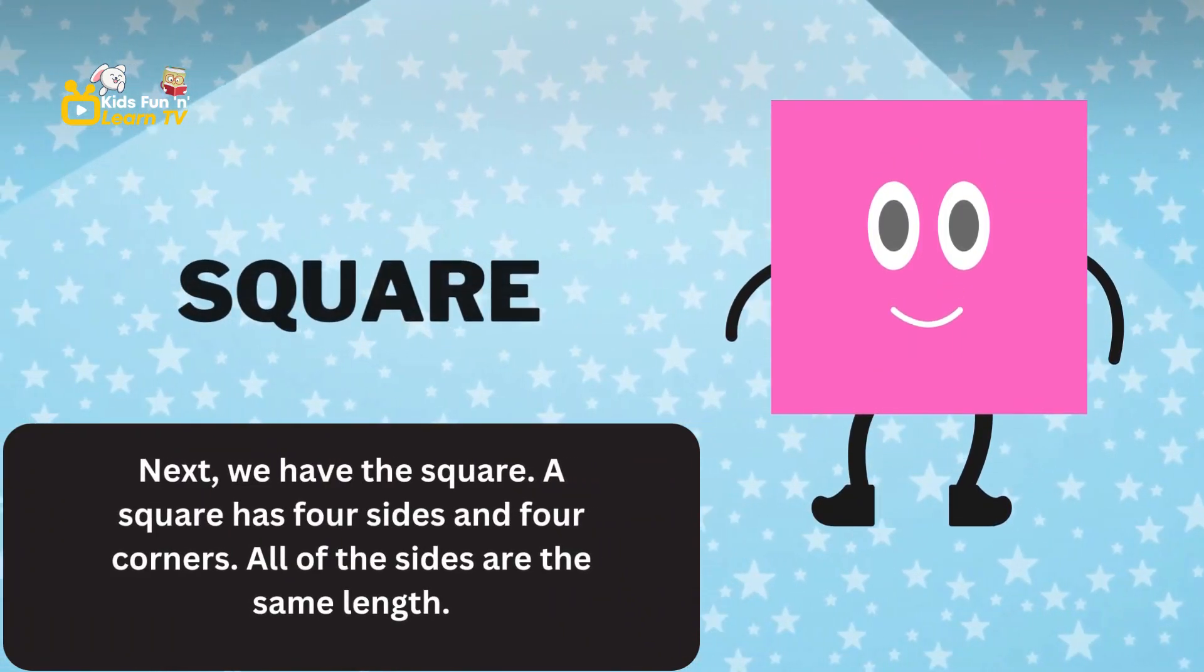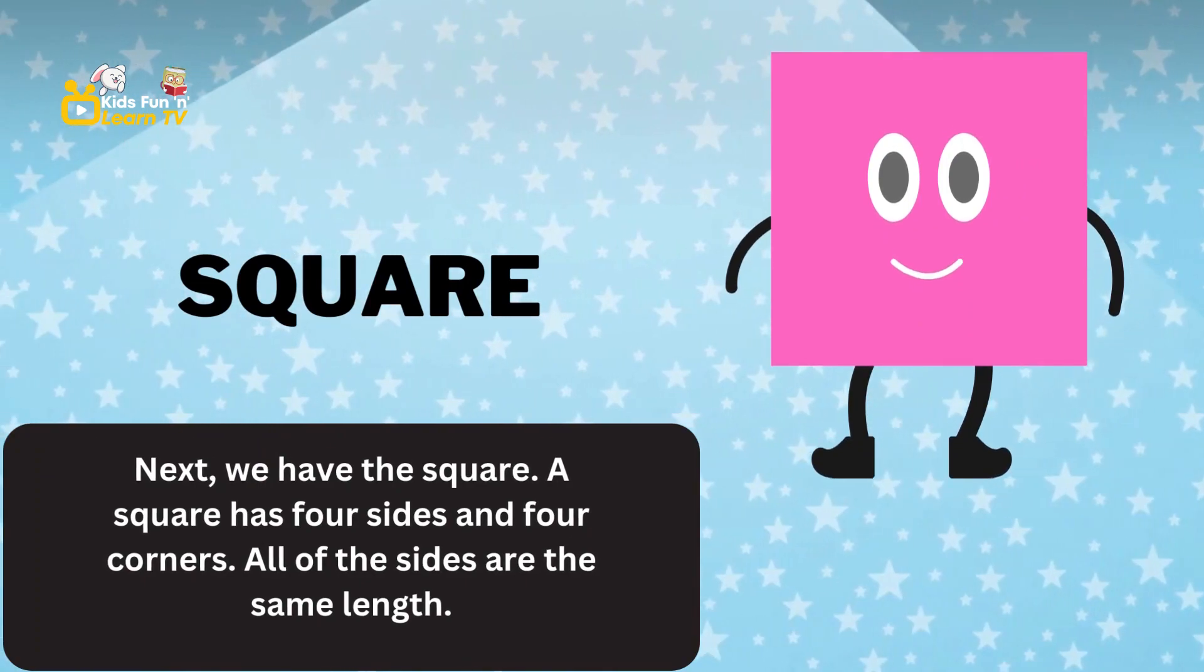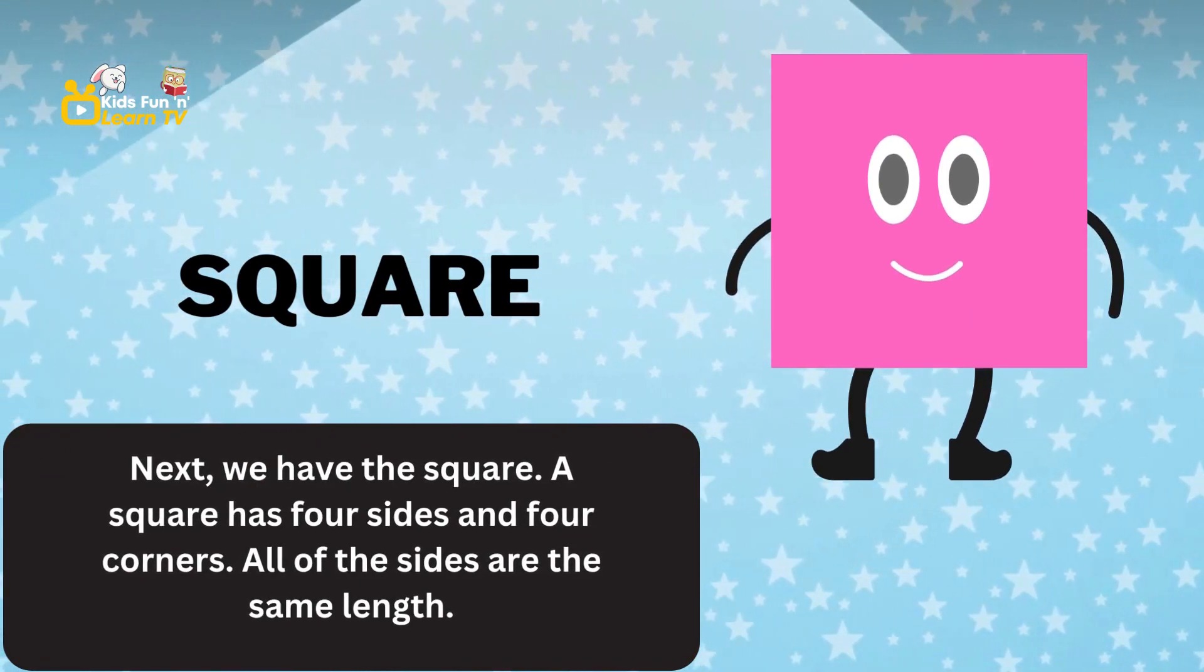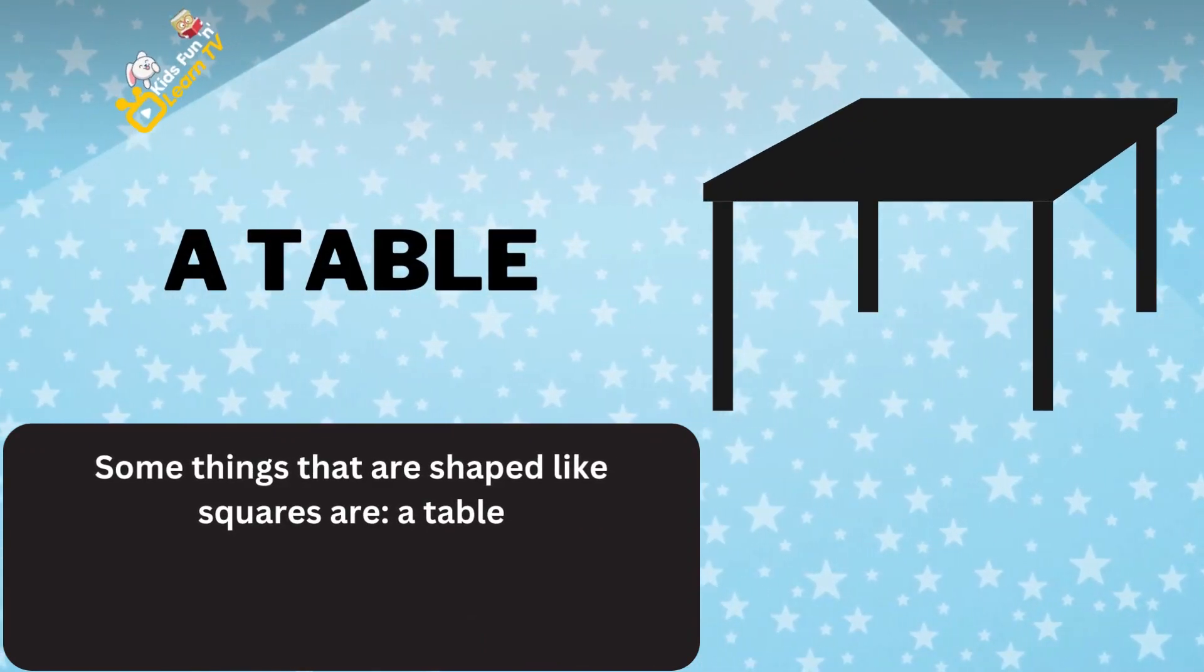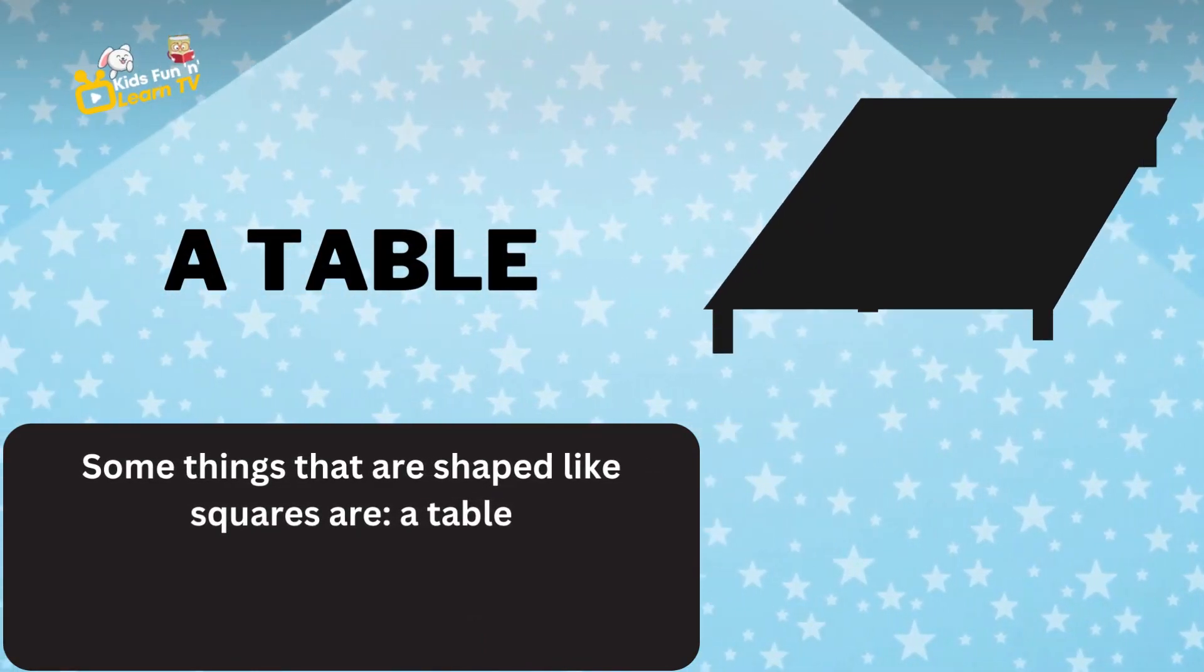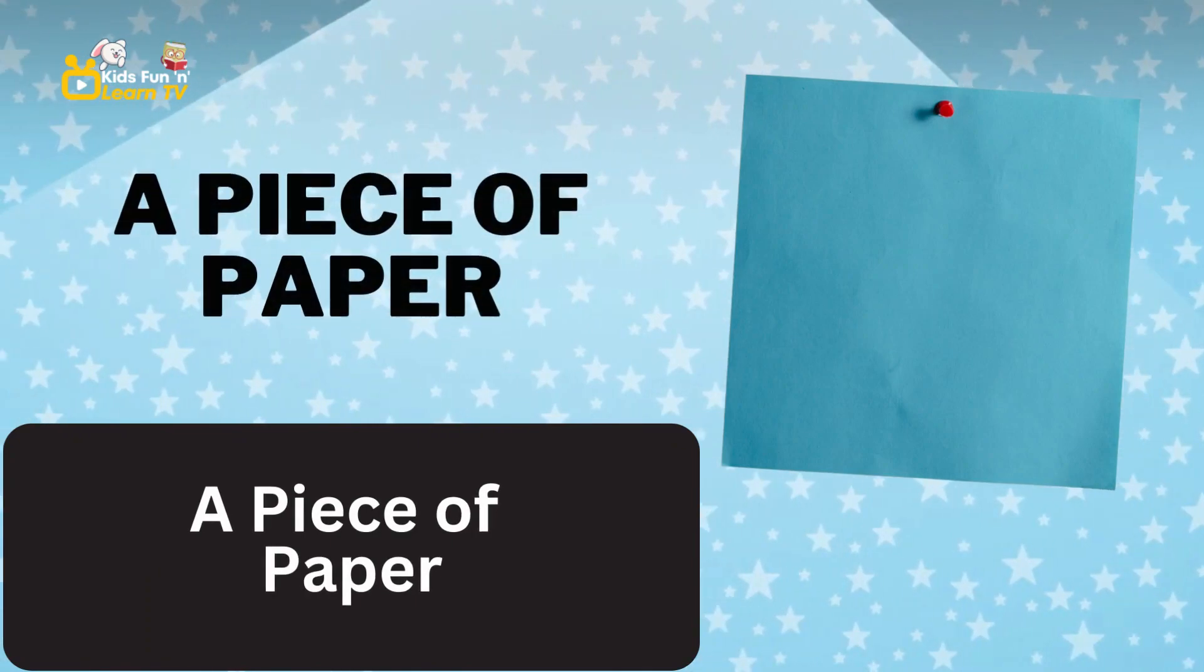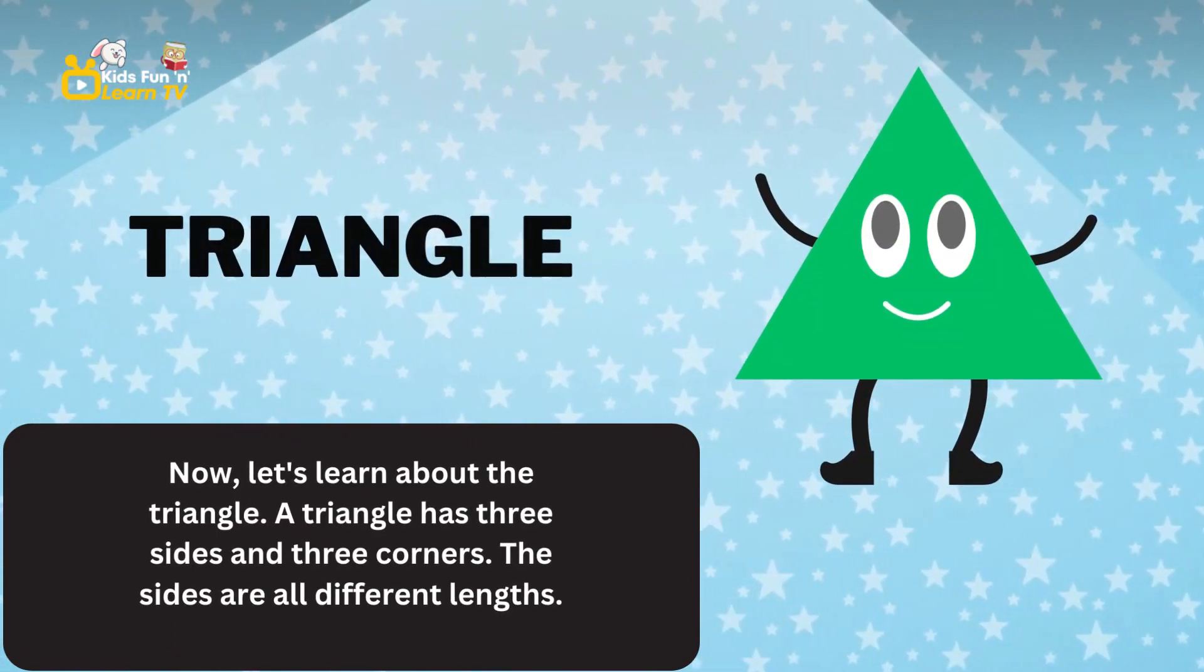Next we have the square. A square has four sides and four corners. All of the sides are the same length. Some things that are shaped like squares are a table and a piece of paper.